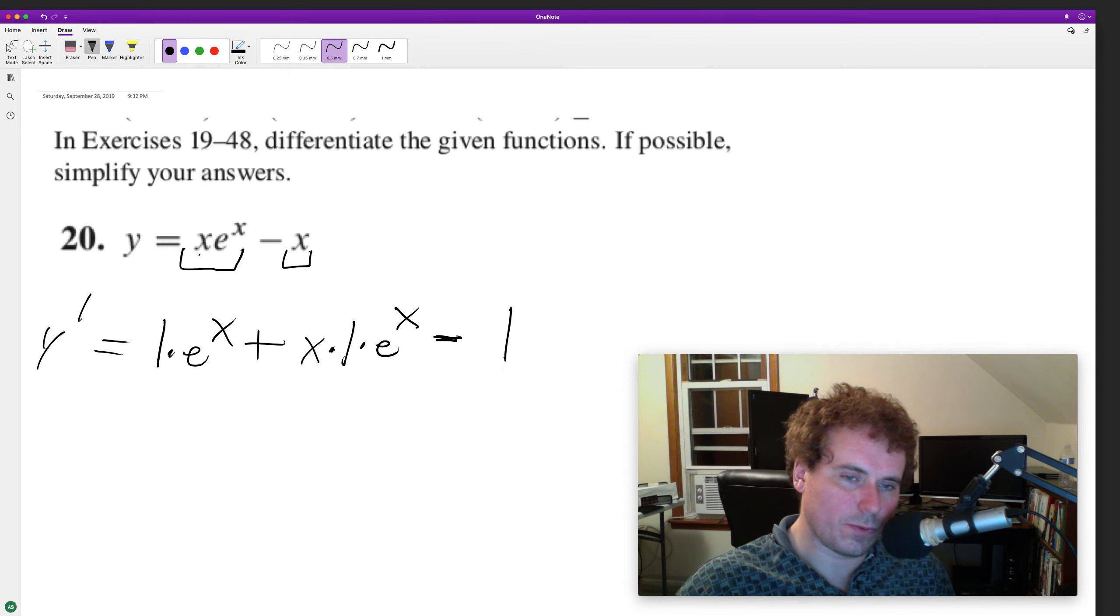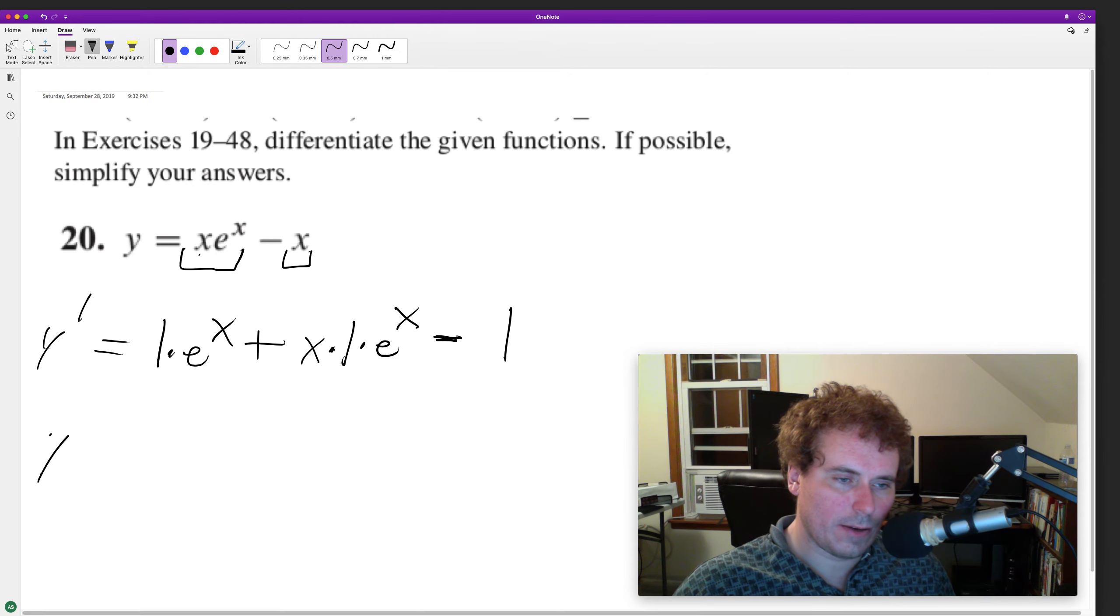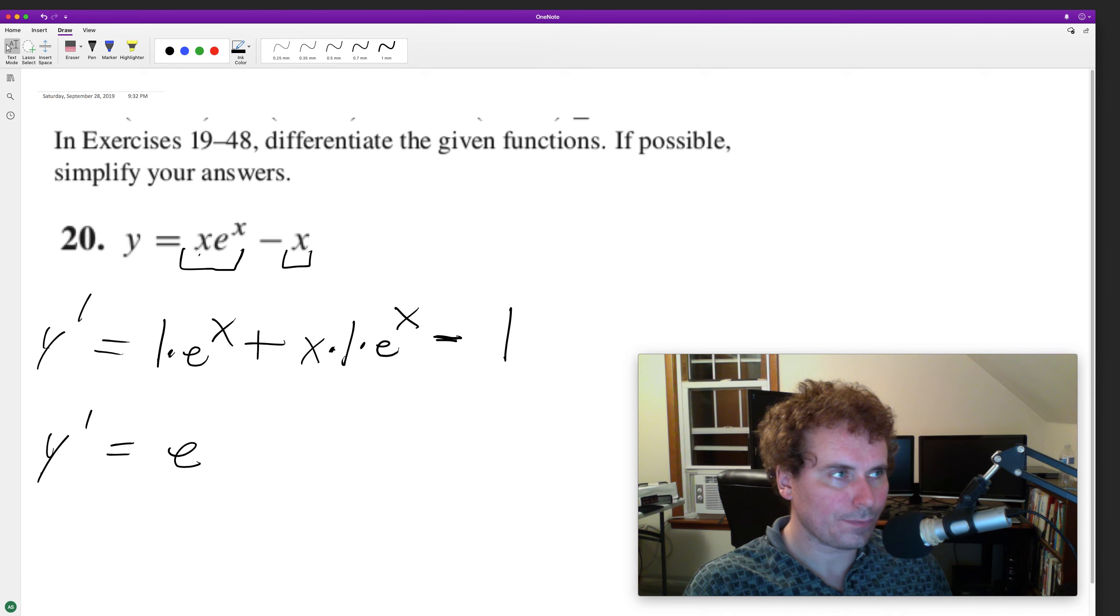derivative of X is just 1. So we end up with y prime is equal to e raised to the X. Give me a second here, e raised to the X plus X e raised to the X minus 1, and that's it.